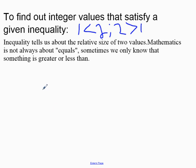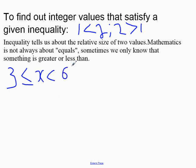Say we have something like 3 less than or equal to x, which is your unknown or variable, less than 6, and you were asked to find the integer values that satisfy this inequality. You need to know this is in two parts. The first part is x is less than 6.